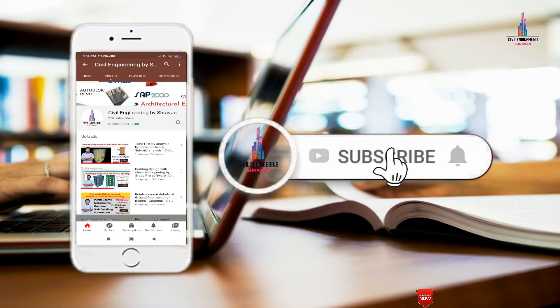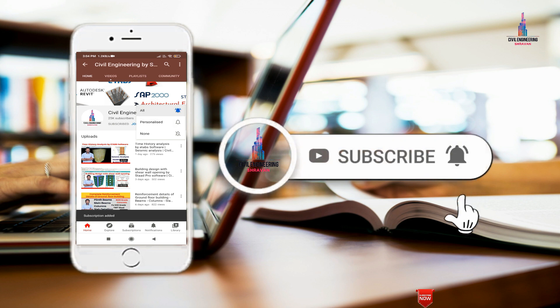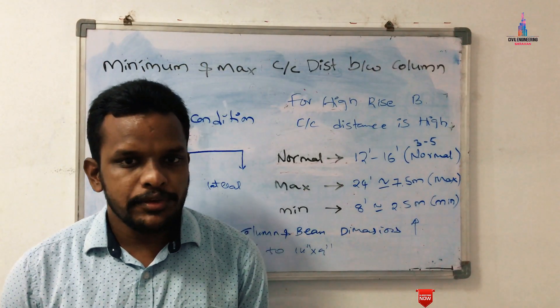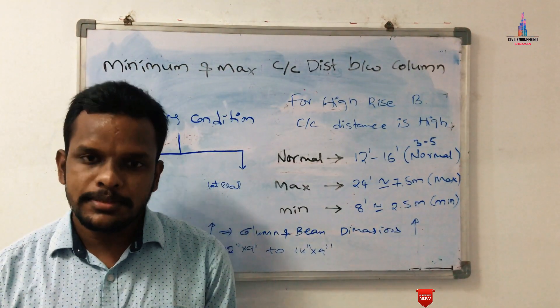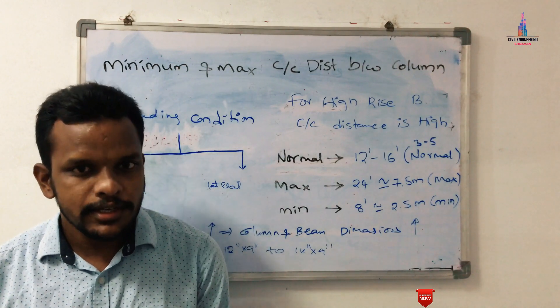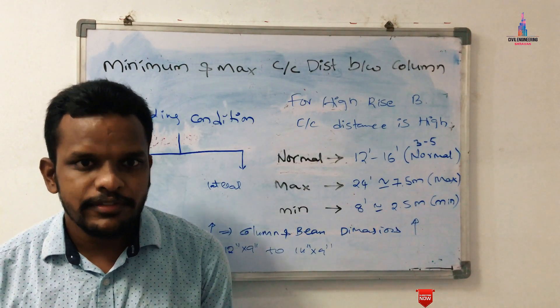Please click on the subscribe button and click on the bell icon for more interesting updates on civil engineering concepts. In this video lecture, I will explain what is the maximum center-to-center distance and minimum center-to-center distance we will consider for building design for the column section.